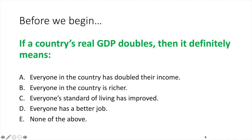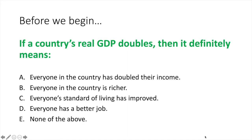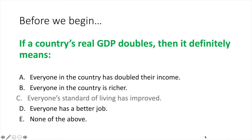If a country's real GDP doubles then it definitely means: a) everyone in the country has doubled their income, b) everyone in the country is richer, c) everyone's standard of living has improved, d) everyone has a better job, e) none of the above.